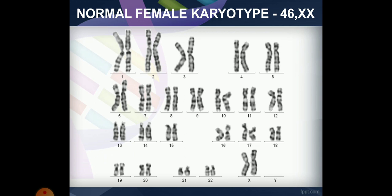In this slide, there is a chromosome in a human being. There are many chromosomes in human beings, and these chromosomes have a banding pattern. We arrange the chromosomes as a karyotype.